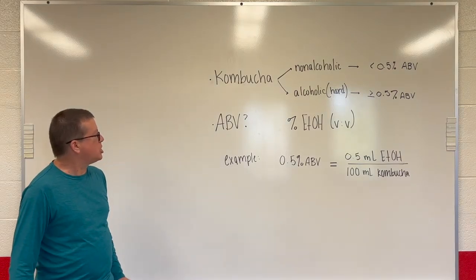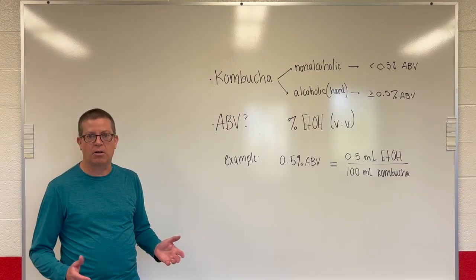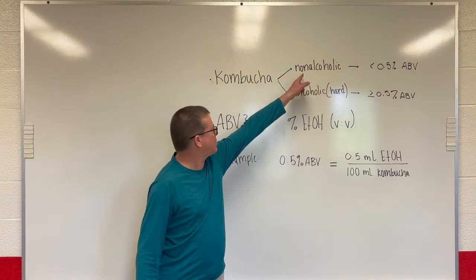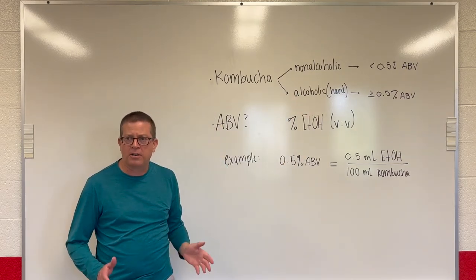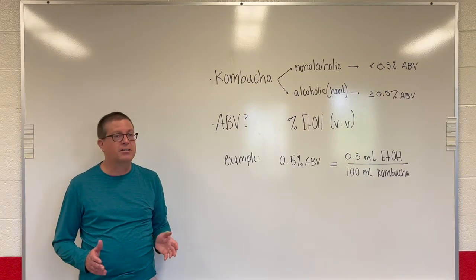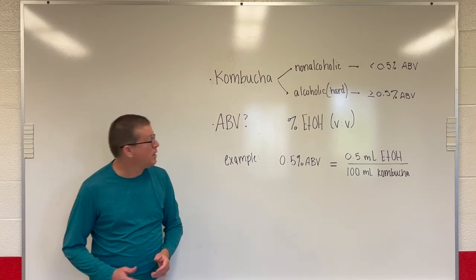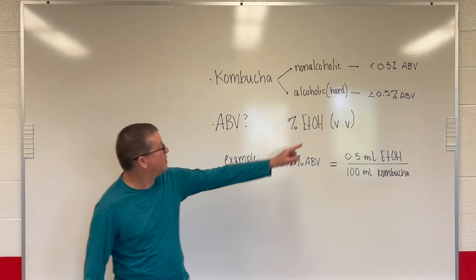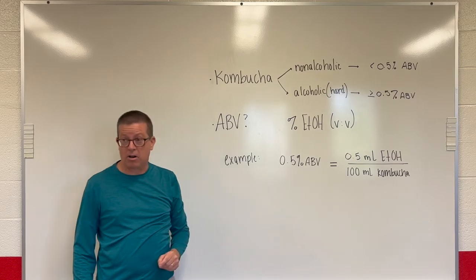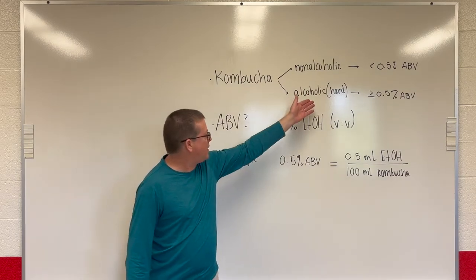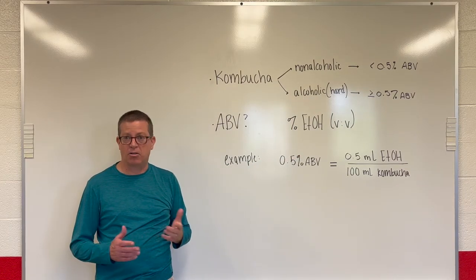Kombucha can be characterized in two ways based on its ethyl alcohol concentration: it can be classified as either a non-alcoholic kombucha or an alcoholic, or hard, kombucha. According to the United States Alcohol and Tobacco Tax and Trade Bureau — the TTB — the cutoff is 0.5% ABV. If a kombucha has less than 0.5% alcohol by volume, it's classified as non-alcoholic. If the ABV is greater than or equal to 0.5%, it must be classified as an alcoholic or hard kombucha.